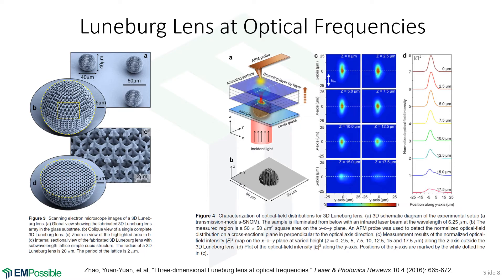There is no fundamental length scale in electromagnetics, so we can scale this down. In fact, there are Luneberg lenses at optical frequencies — you can chase the reference at the bottom to read about this, and there are others. This works the same way: we are collimating a beam on one side and focusing at the other side of the Luneberg lens sphere.